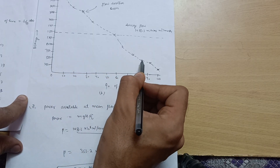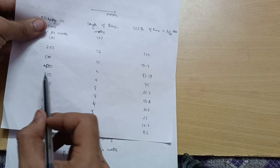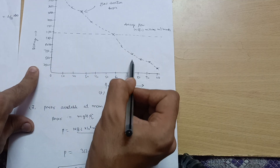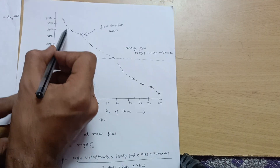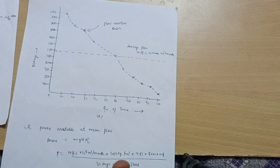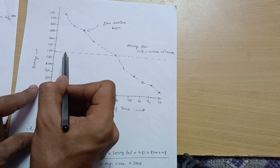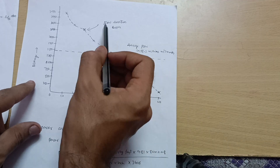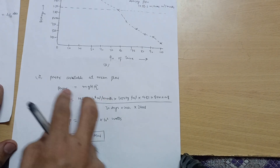At 75%, discharge is 800. Continue plotting all points accordingly, then join them with a smooth free-hand curve. This curve is called the flow duration curve. Mark the average flow of 1458.3 million meter cube per month as a dotted line on the graph.